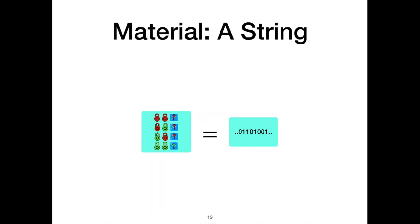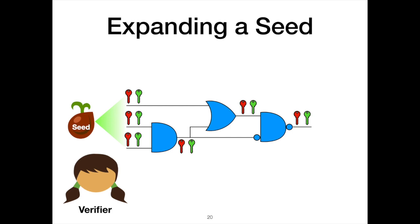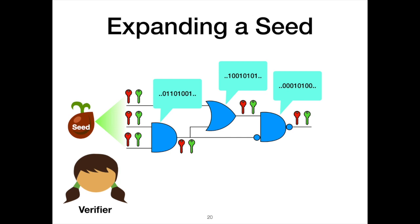I'll discuss two key ideas that are the backbone of our approach. The first is about viewing collections of encrypted truth tables — this material — as just a string. We can manage these as strings, and we can take two collections of material and add them together using bitwise XOR. The second key idea is to view a circuit encryption in garbled circuits as the expansion of a pseudo-random seed. We will allow Alice the verifier to start from a small seed and use it as the source of all randomness to encrypt her circuit.